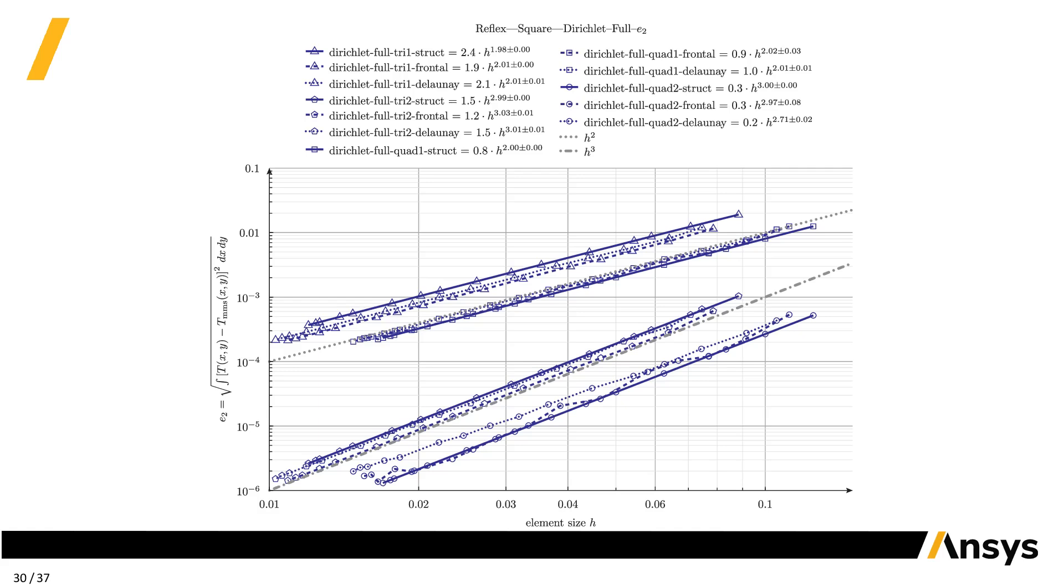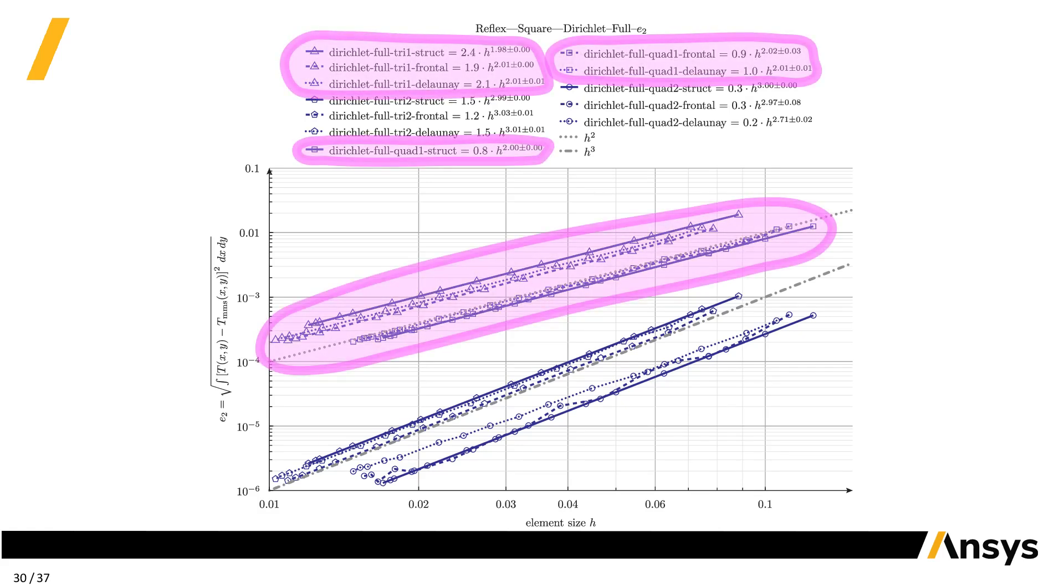These are some results for the 2D case we proposed, as solved by reflex with different meshing algorithms, element types and orders. These slopes match the theory, although the uncertainties get larger for bad quality meshes. We have lots of results due to exponential blowout, so ping me for more details.